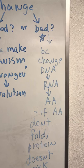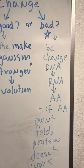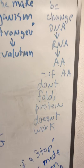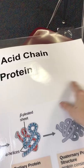Bad mutations work like this: if there's a mutation in DNA, it gets transcribed into RNA and then translated into amino acids. The change in DNA gets passed all the way through to the amino acid level, giving you a wrong amino acid. Amino acids must fold into proteins — but with the wrong amino acids, the protein won't fold correctly and won't work.